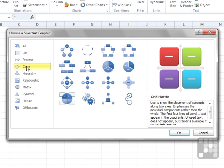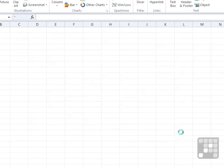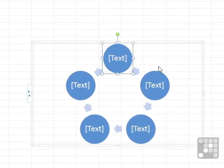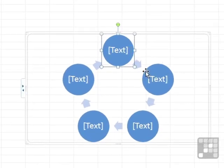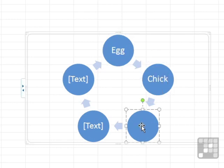Let's choose one of the cycle graphics — the Basic Cycle to start with would be great. We are given five shapes and you enter your text by clicking and typing. So we might have a cycle of an egg, which becomes a chick.